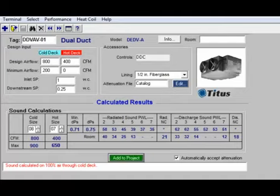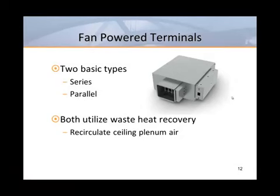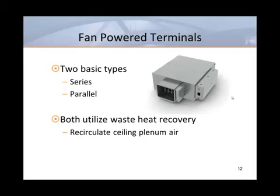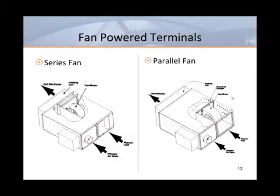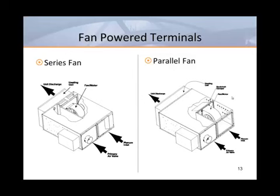Now let's look at fan powered units. Fan powered terminal units are available in two basic types, typically referred to as series or parallel fan units. There are other subcategories including quiet, ultra quiet, low profile, and units designed for under floor applications. The unit fan draws return air to be used as free heat and delivers it back to the space. In a series fan unit, cold primary air is delivered by an air handler to the VAV inlet. The unit fan runs continuously to deliver a constant volume of mixed air to the room, while the primary inlet regulates the amount of cooling and makeup air is pulled into the induction port.